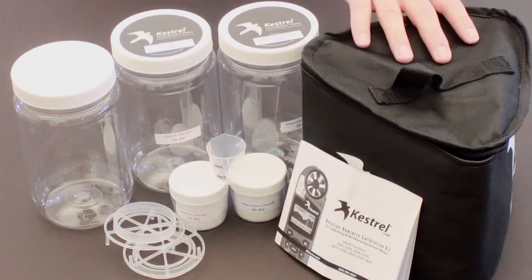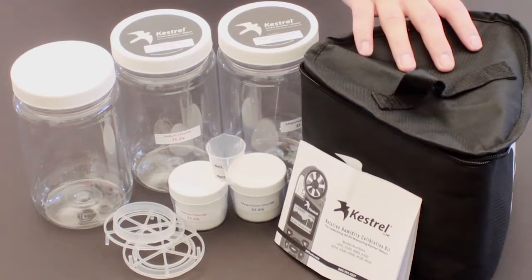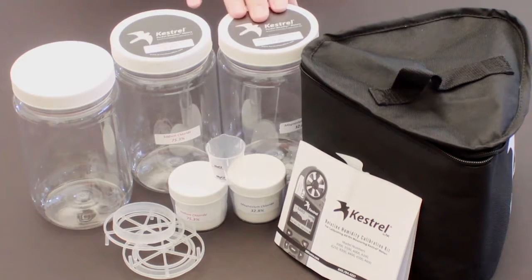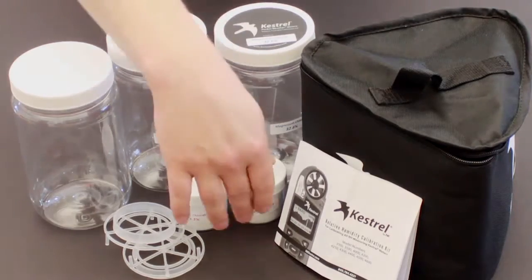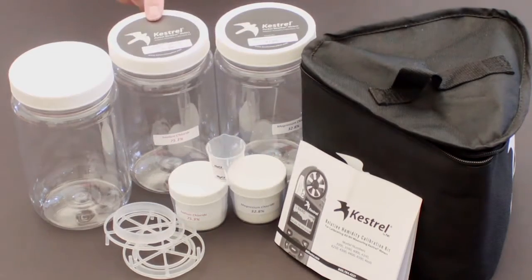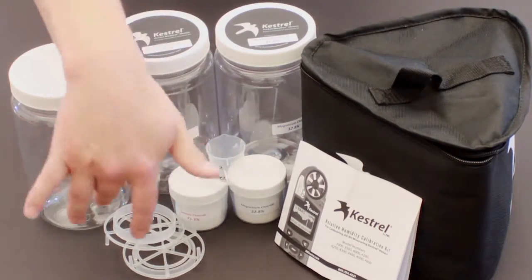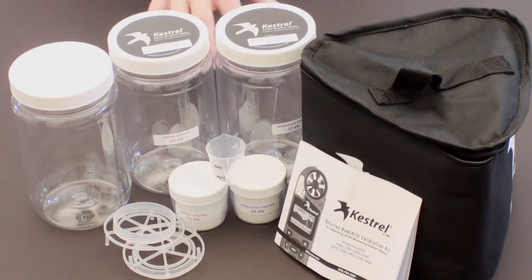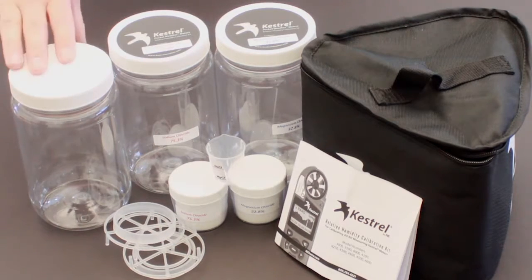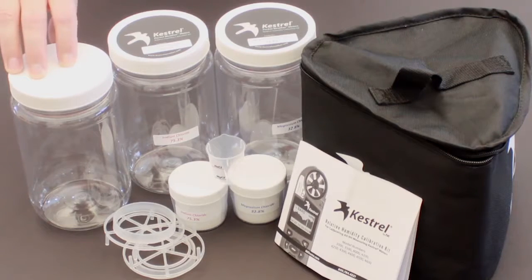We can get a Kestrel RH calibration kit, and customers can recalibrate their Kestrels in the field. The RH calibration kit comes with an insulated bag. The contents of this bag are magnesium chloride jar and salts, a sodium chloride jar and salts. Both come with grids that you will put in a jar, and then one jar that will be filled with tap water to stabilize the temperature.